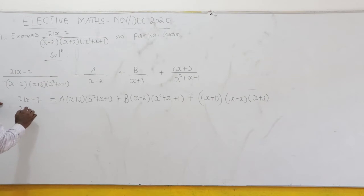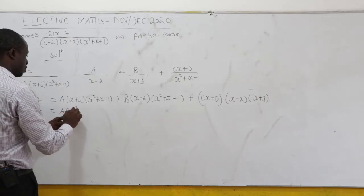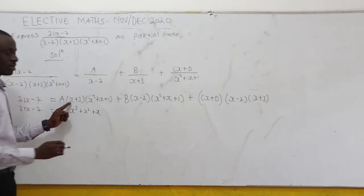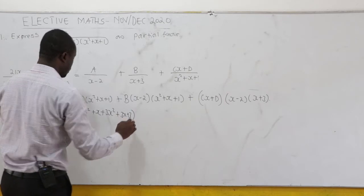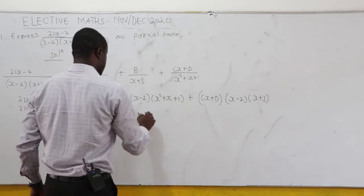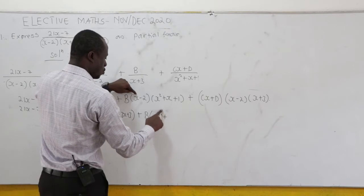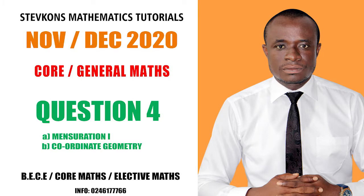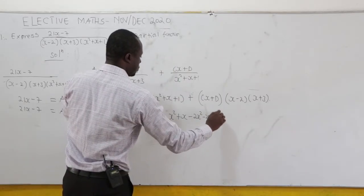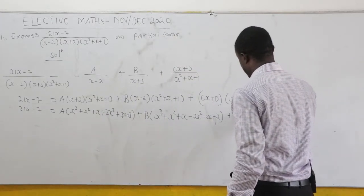So 21x minus 7 equals A times (x squared plus x plus 1)(x plus 3), which when expanded gives x cubed plus x squared plus x plus 3x squared plus 3x plus 3. Then plus B times (x minus 2)(x squared plus x plus 1), expanding gives x cubed plus x squared plus x minus 2x squared minus 2x minus 2.